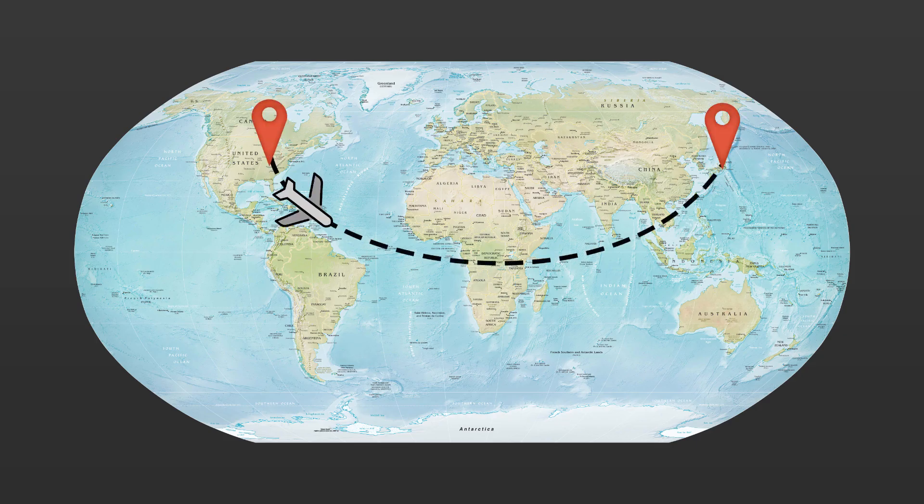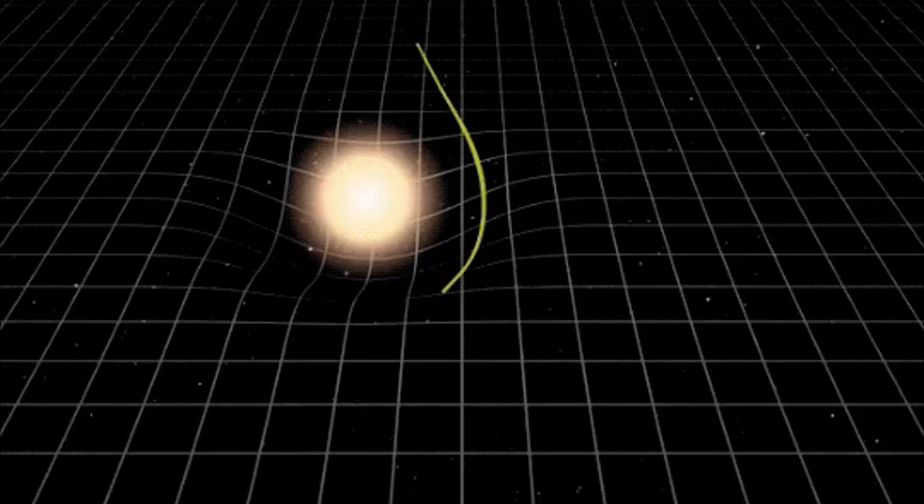The straightest path in our universe is usually curved. If you want proof, you could check any long-haul flight path or watch light bend around a star.